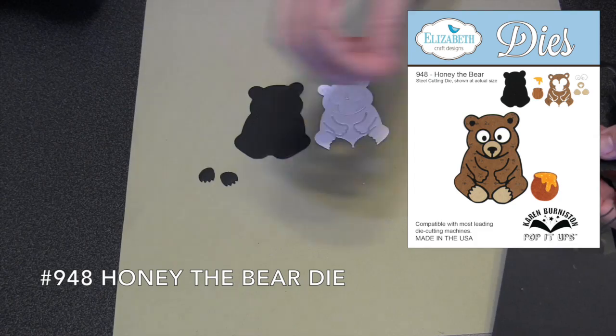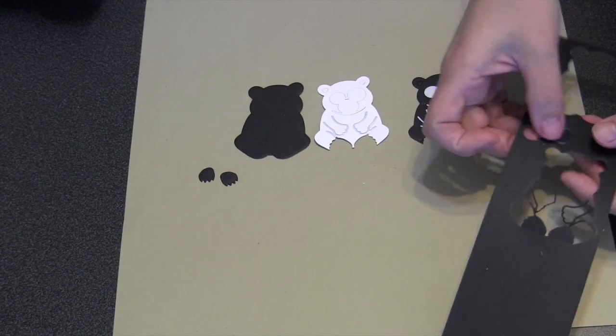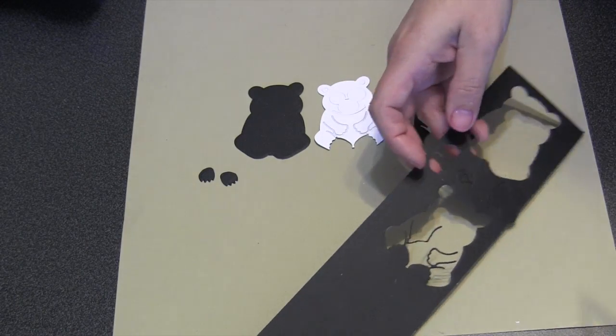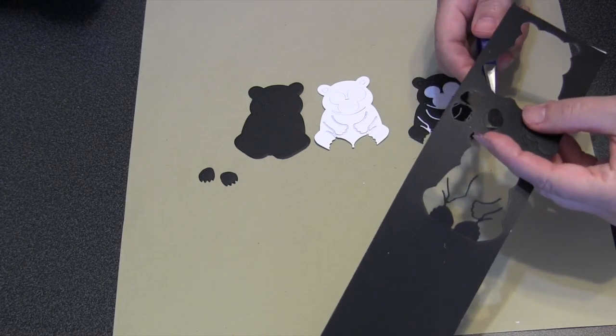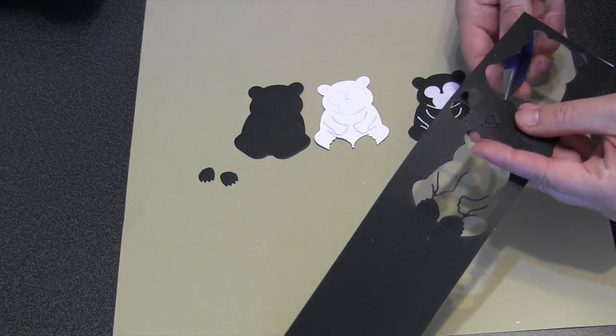All I'm going to do is die cut the pieces I need: two detail layers, one white, one black, and then I need a black shadow layer. I need two black feet and then I need the black snout piece.